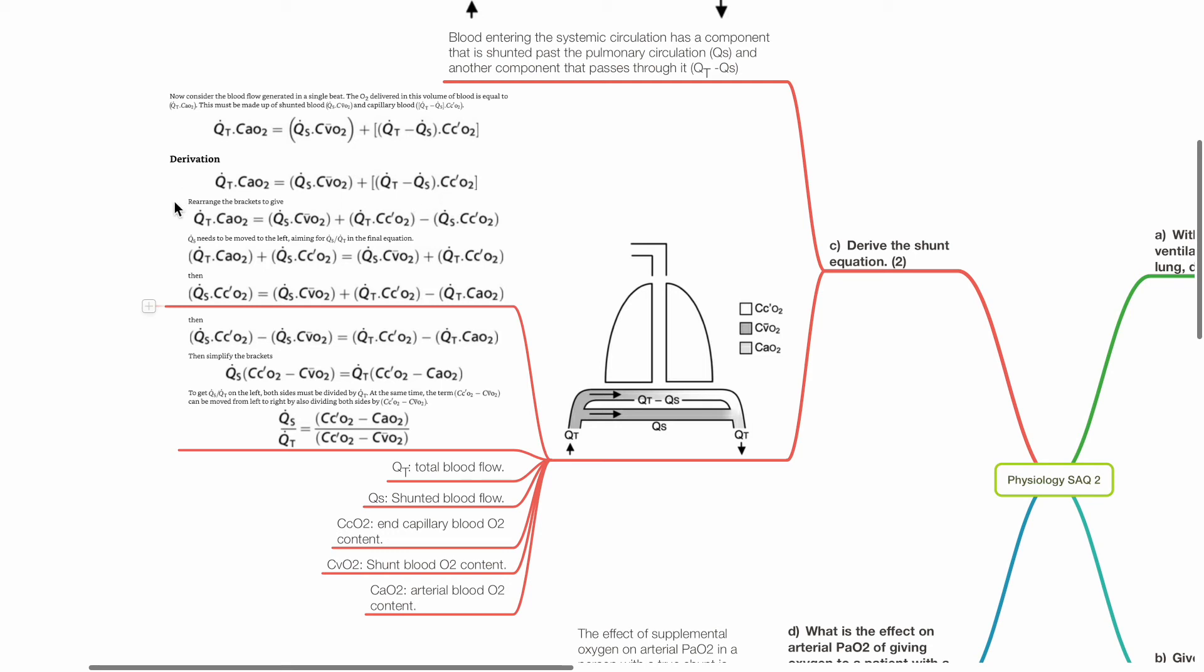Rearrange the brackets to give Qt times CaO2. Qs needs to be moved to the left aiming for Qs divided by Qt in the final equation. Then simplify the brackets. Qs times CcO2 minus CvO2 equals Qt times CcO2 minus CaO2.